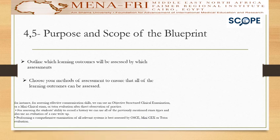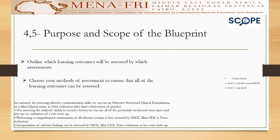Performing a comprehensive examination of an organ system is best assessed by OSCE, mini CEX, or tutor evaluation. Interpretation of relevant findings can be assessed by OSCE, mini CEX, tutor evaluation, or a case write-up. For the blueprint levels, at least three must be known: level one is the overall course level, level two is the unit level — consider your year level — and level three is the instrument level.